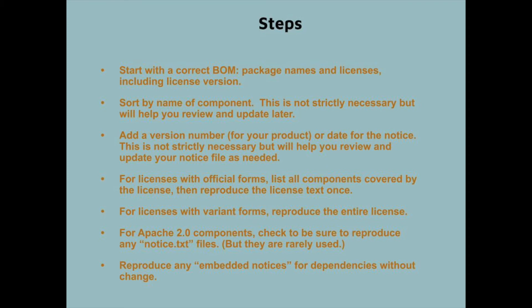Every open source license could theoretically have its own idiosyncratic notice provisions, but the rules we're using here apply to most licenses. There is one very common license with a variation you should be aware of: Apache 2. Apache 2 requires you to reproduce the license like every other open source license, but it also has a provision allowing the licensor to include an additional notice file called notice.txt. For Apache 2, you need to copy over any notice.txt files in their entirety. It is very rare for any author to require such an additional notice, but you do have to look for them.